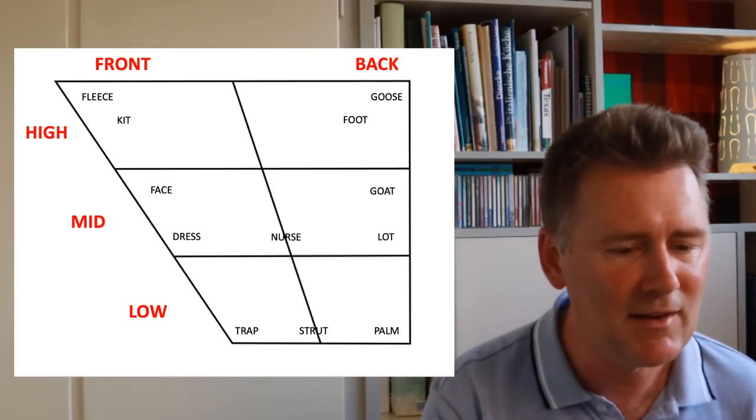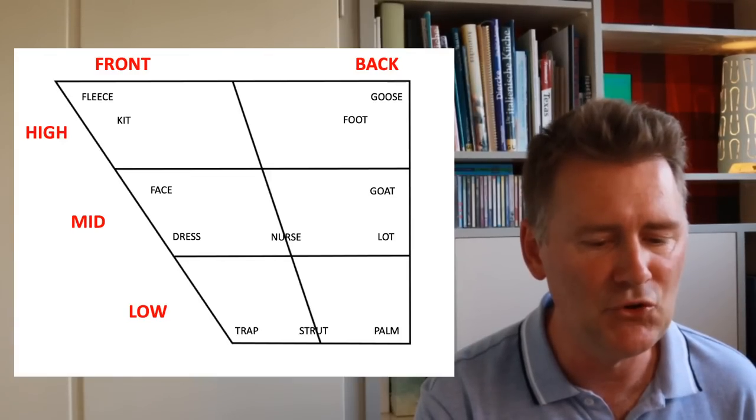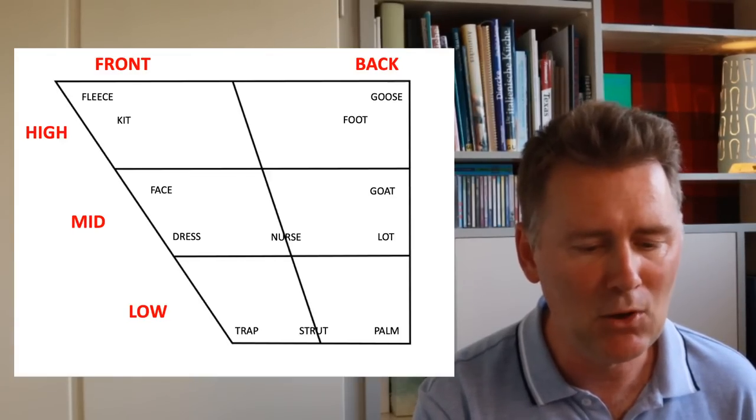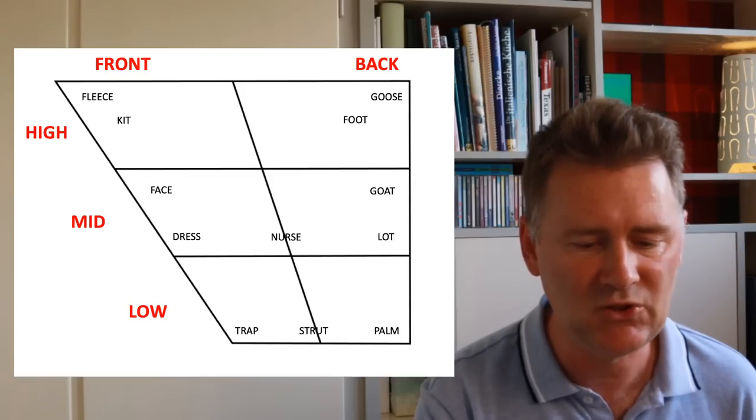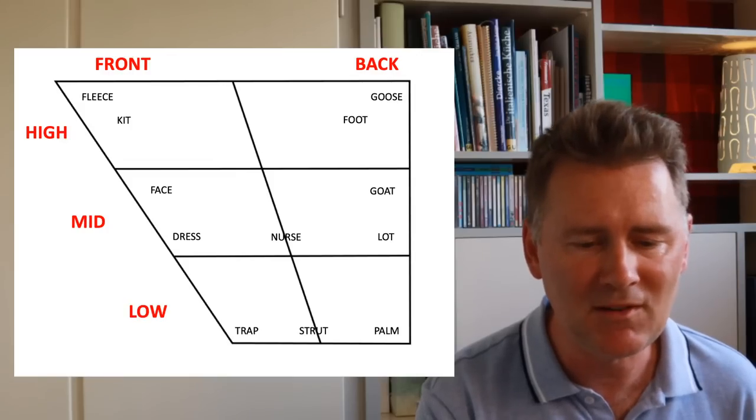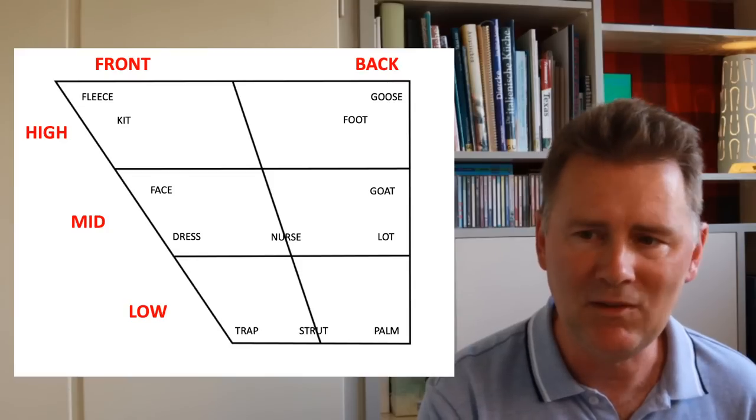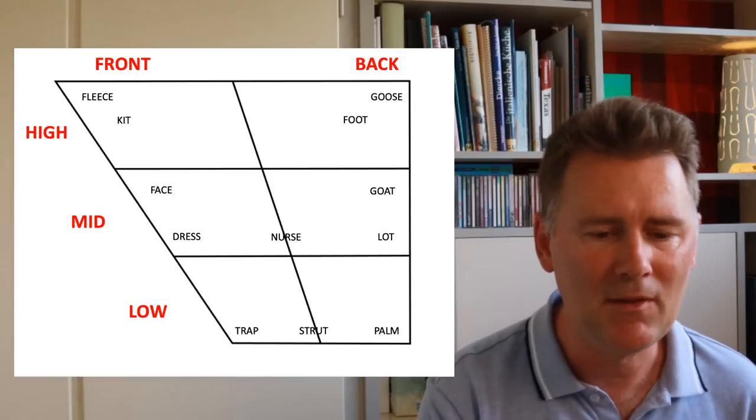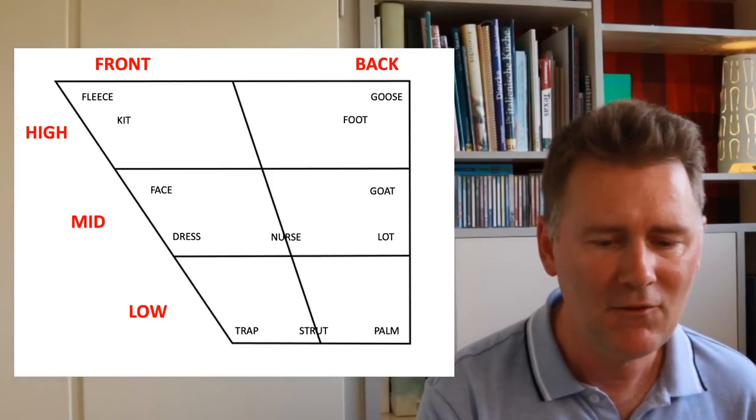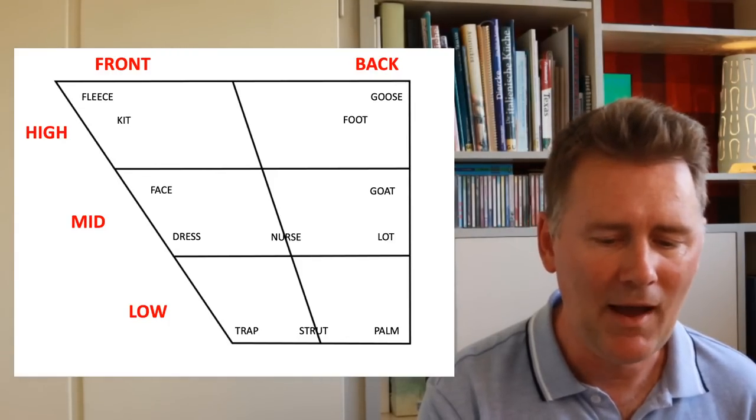It is next to the kit vowel. Further down we have the face vowel, the dress vowel, and then down below we have the trap vowel, the strut vowel, the palm vowel, and if we move from the top back down here on the back side of the vowel chart, we start with goose, then go down to foot, further down to goat, to lot, and we're back at palm.